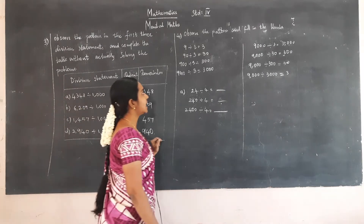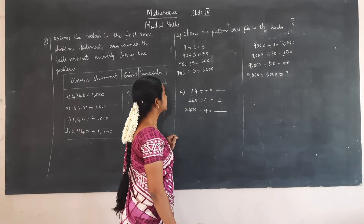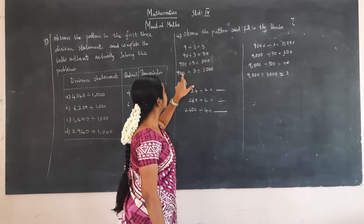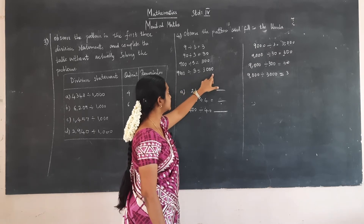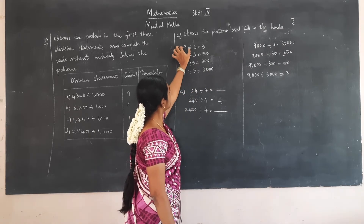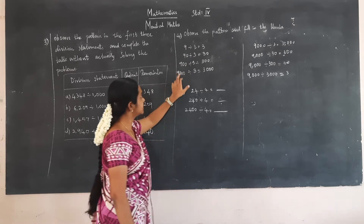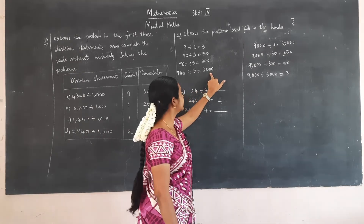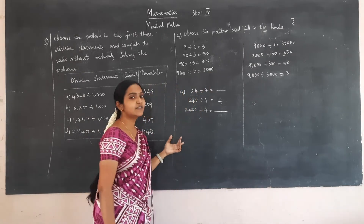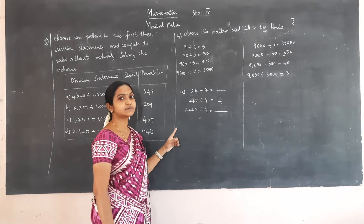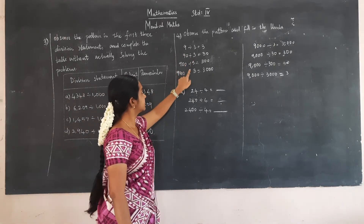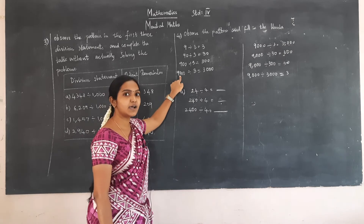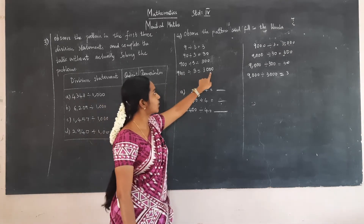Observe the pattern and fill in the blanks. 9 divided by 3 is 3. 90 divided by 3 is 30. 900 divided by 3 is 300. 9000 divided by 3 is 3000. You can see that as the dividend increases, the quotient also increases. These are the dividends, this is the divisor, and these are the quotients. As the dividend increases, the quotient increases.